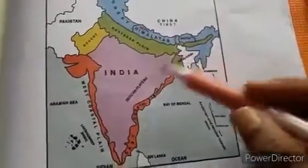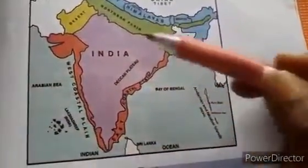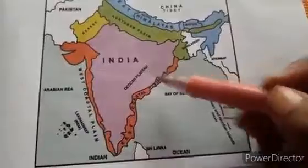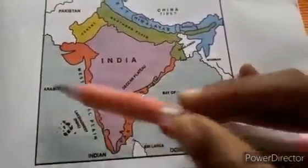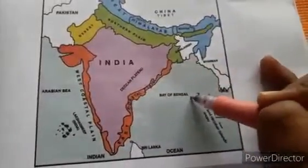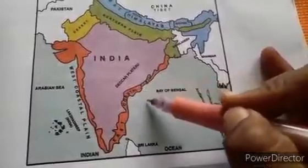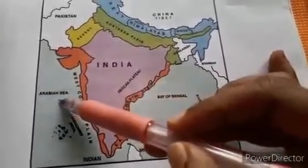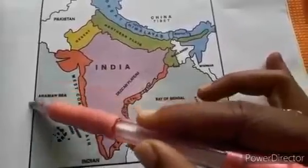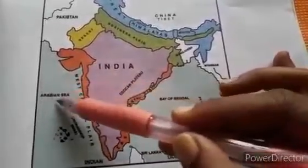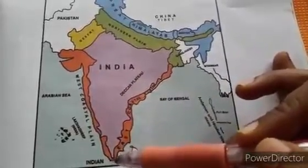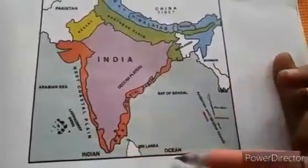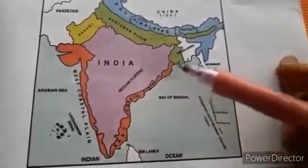Our country is surrounded by the sea on three sides. That's why we call it a subcontinent. In the east we have the Bay of Bengal, on the west side we have the Arabian Sea, and in the southern side it is surrounded by the Indian Ocean. Can you see it in the picture? Can you say the names of the seas?